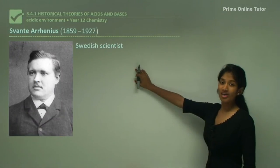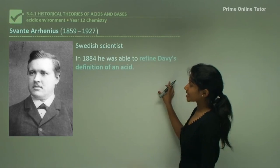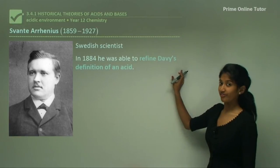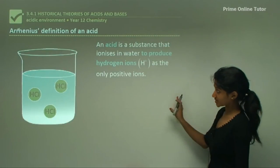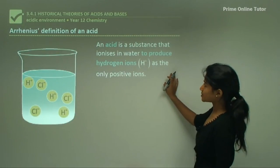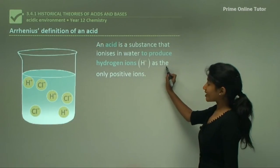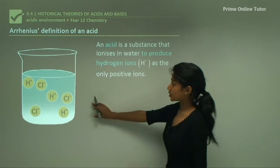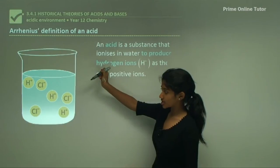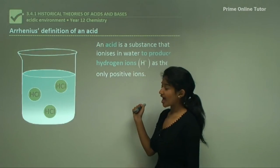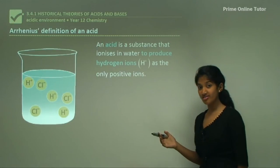Then came Arrhenius. Arrhenius was a Swedish scientist and in 1884 he was able to refine Davy's definition of the acid. He built upon it, saying that an acid is a substance that ionizes in water to produce hydrogen ions as the only positive ions. We have hydrochloric molecules producing hydrogen ions and chloride ions — the hydrogen ions are the only positive ions.